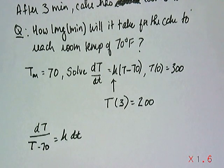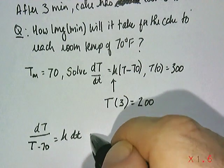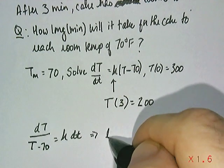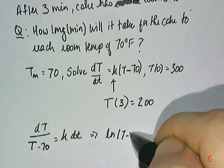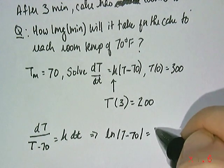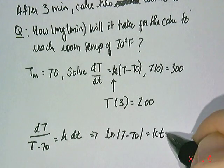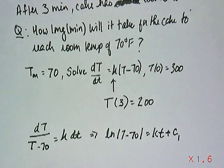And then, in this case, you could do your integration, and so forth, and we know that we would get something in this form. The natural log of the quantity and absolute value T minus 70 is going to be that constant proportionality times t plus some integration constant.